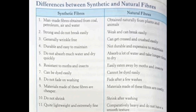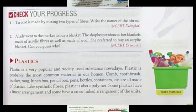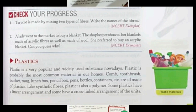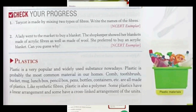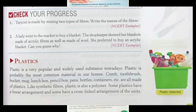The last fiber is spandex. Spandex is known for its elasticity. It is not a polymer alone but a co-polymer, having two monomer units - polyester and polyurethane. Its common name is Lycra. Due to its elasticity, it is used for making leggings, and the tight-fitting clothes worn by wrestlers, gymnasts, and athletes.